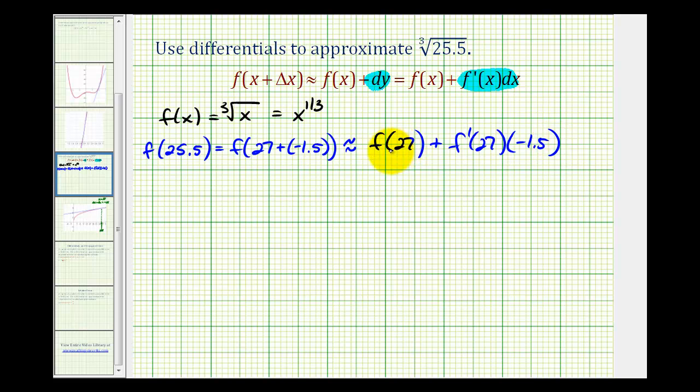Notice to do this, we're going to have to determine the derivative of the given function. F prime of x is going to be equal to 1/3 times x to the negative 2/3, which we can write as 1 over 3 times x to the 2/3 power.